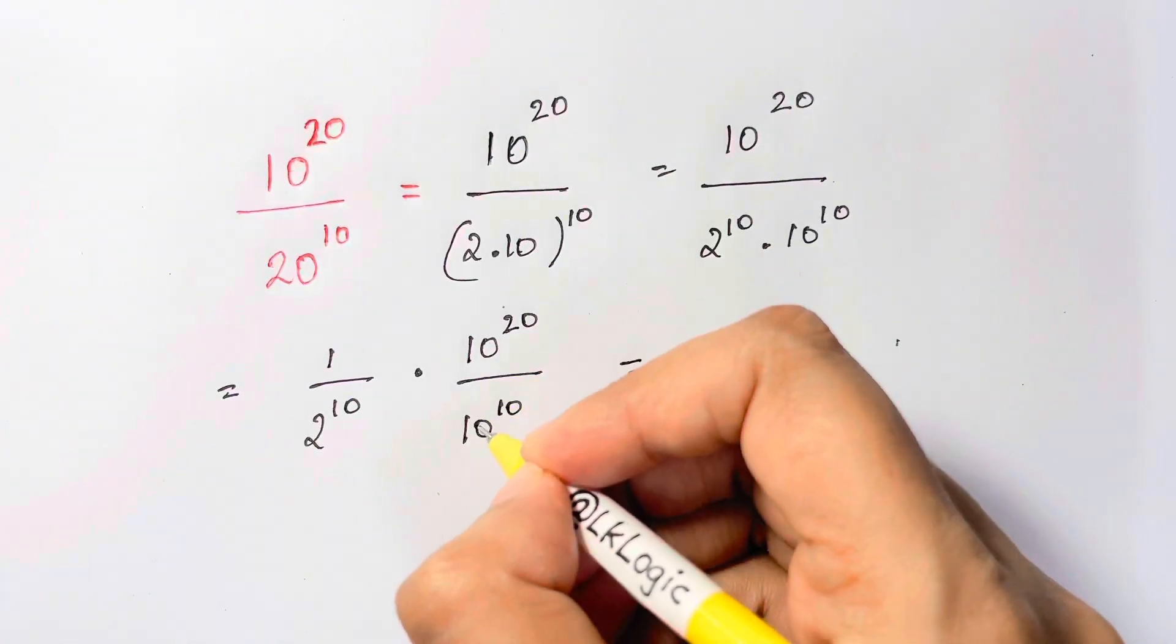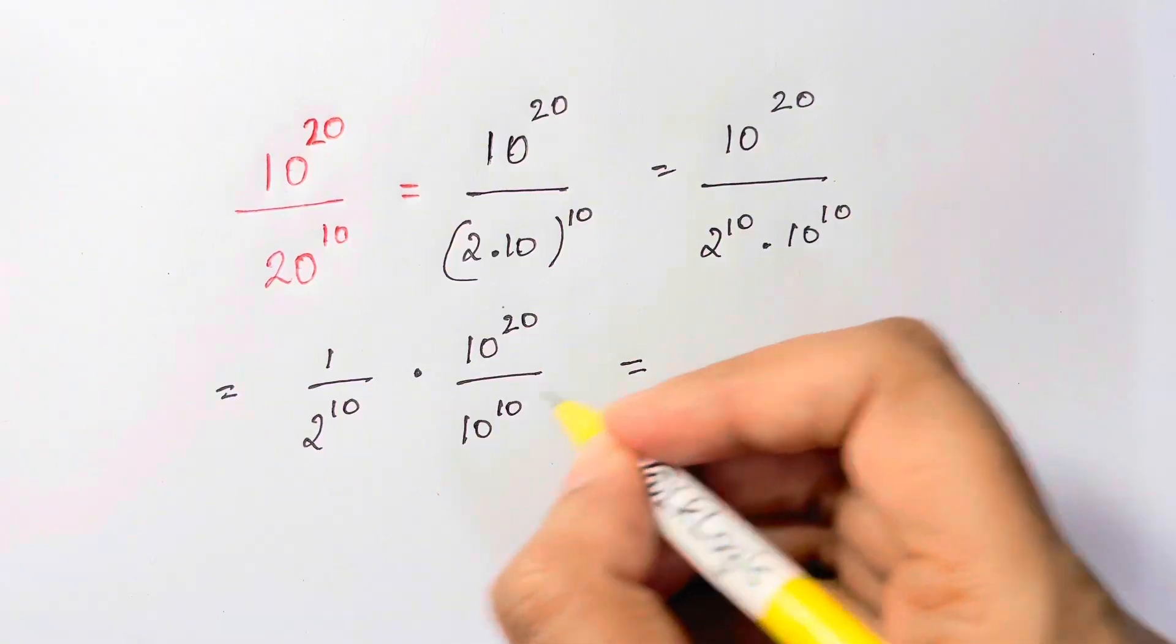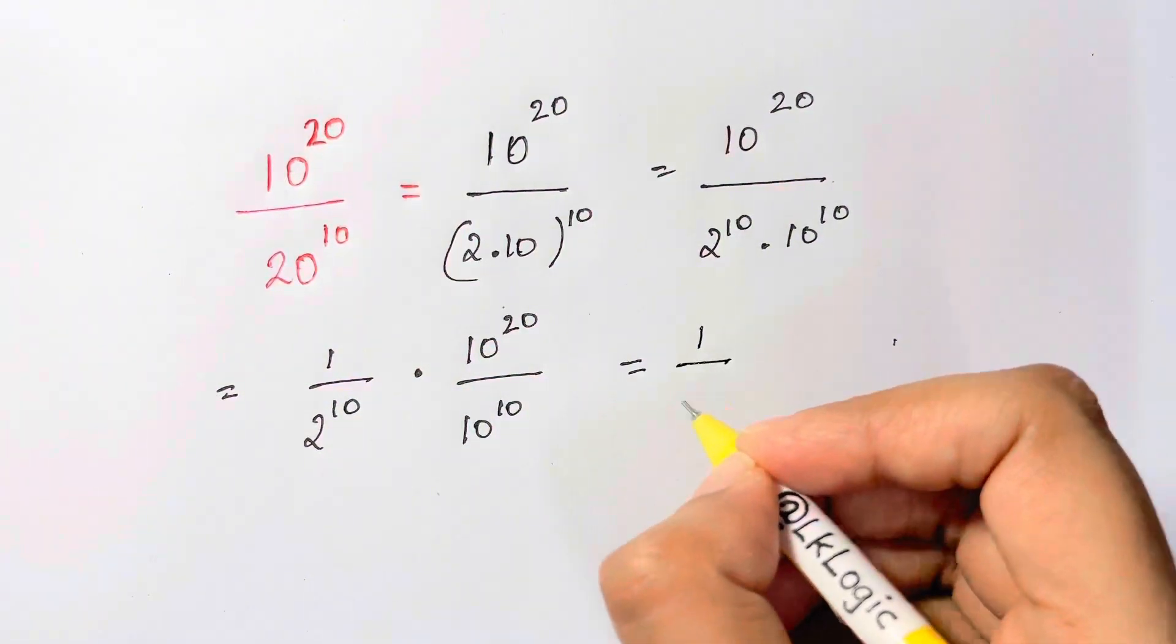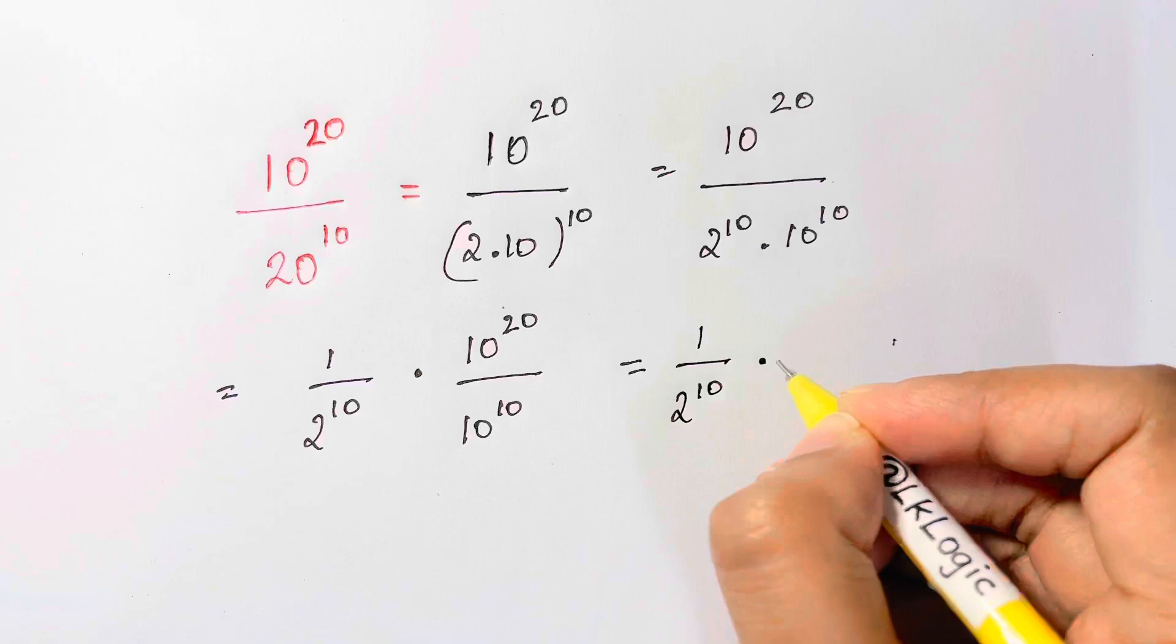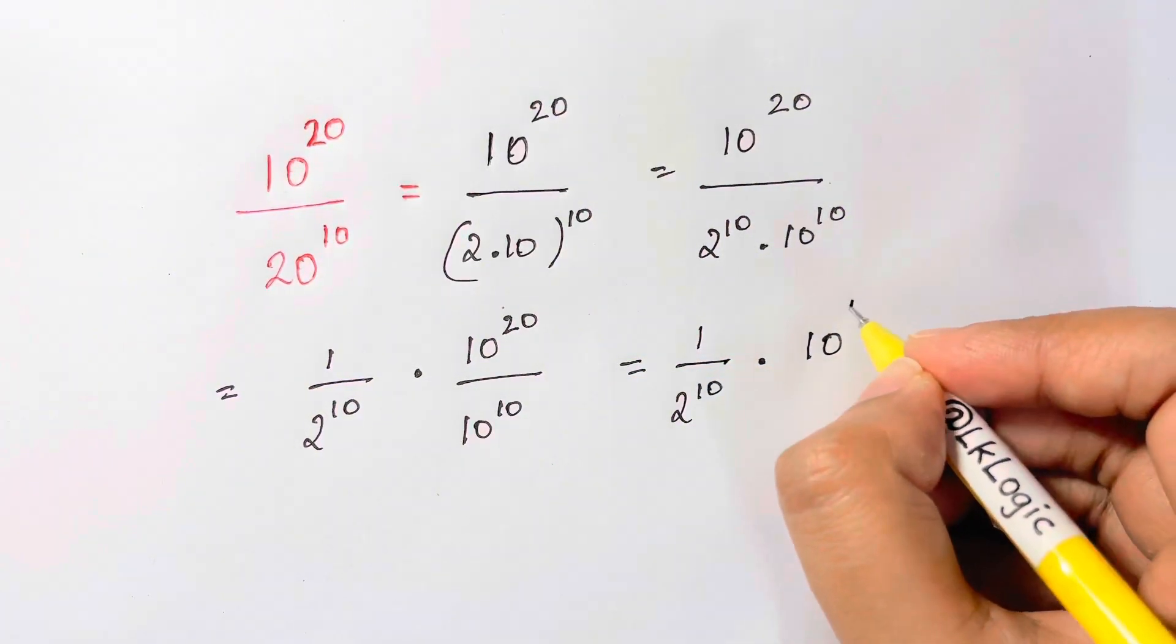Now what you can see here, same base, there is division between them, so you subtract the powers. So I'll write this one as it is, 1 over 2 to the power of 10 times, I have 10 to the power of, subtracting the powers, 20 minus 10 is 10.